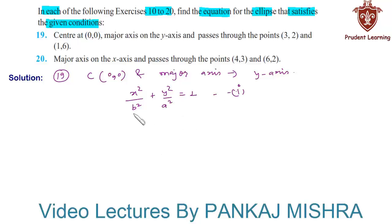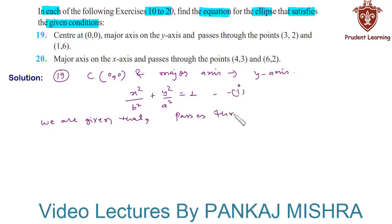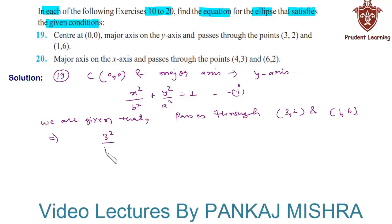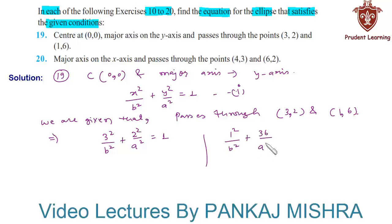Here, a is the length of the semi-major axis and b is the length of the semi-minor axis. We are also given that this ellipse passes through points (3, 2) and (1, 6). This implies that these two points must satisfy equation 1. Therefore, 3² over b² plus 2² over a² equals 1, and 1² over b² plus 36 over a² equals 1.